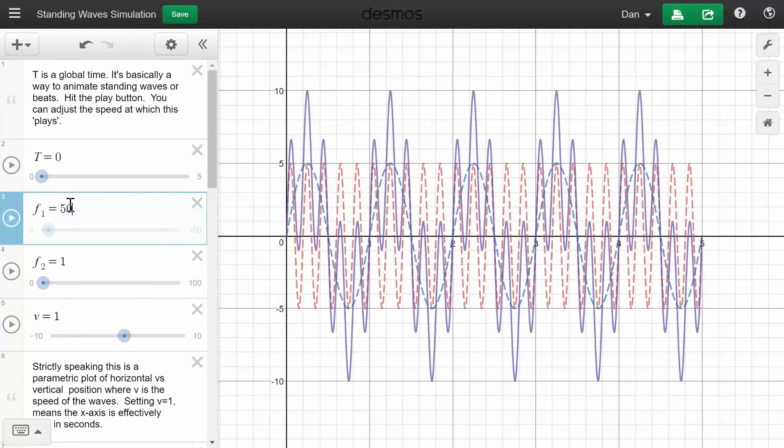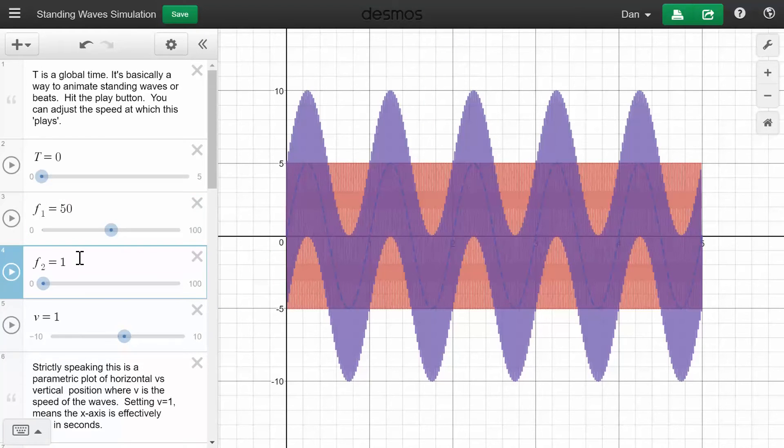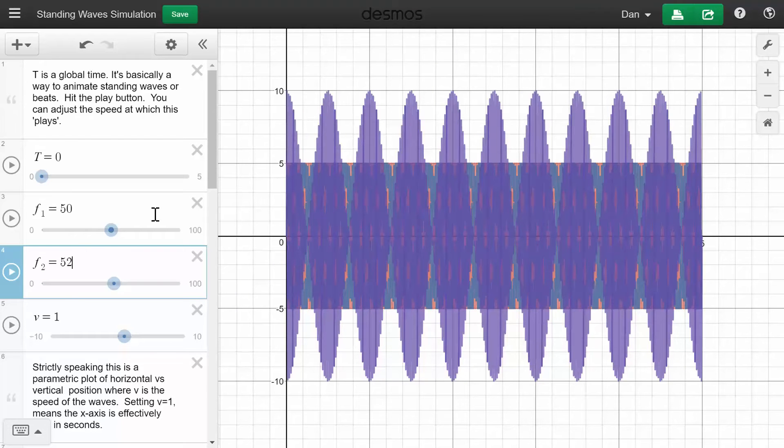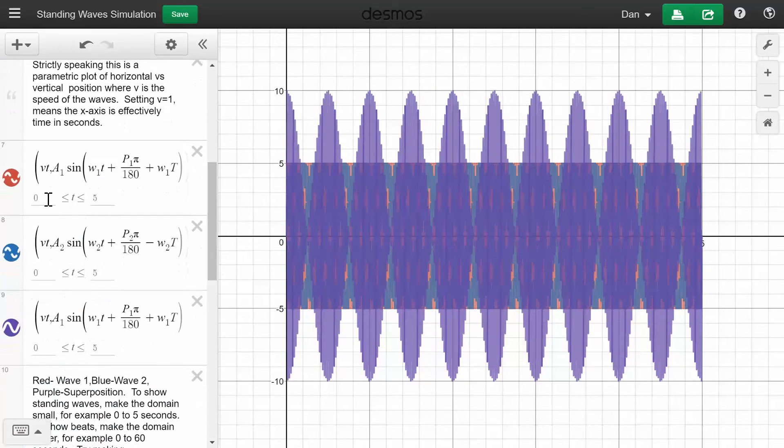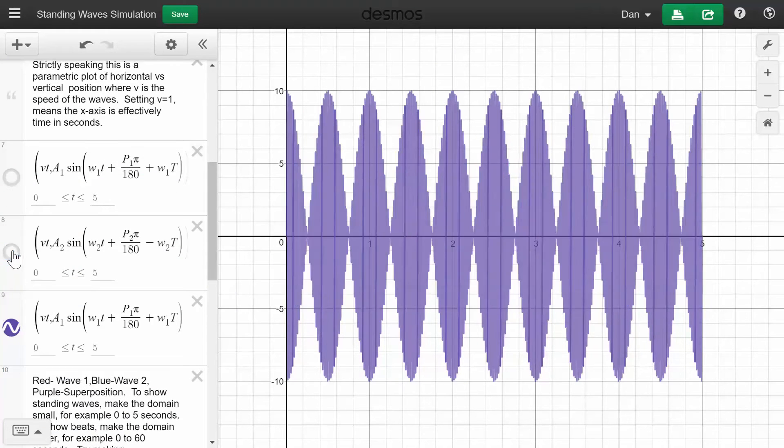Well, if we make the first frequency 50 Hz, and we make the second frequency 52 Hz, it looks a little muddled. So I'm actually going to toggle off the red and the blue and look at just the superposition.